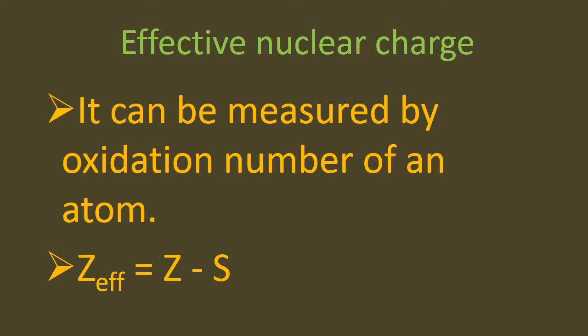Effective nuclear charge can be measured by the oxidation number of an atom. Greater the effective nuclear charge, the more strongly the outermost electrons are attracted towards the nucleus, and the size of the atom will decrease.